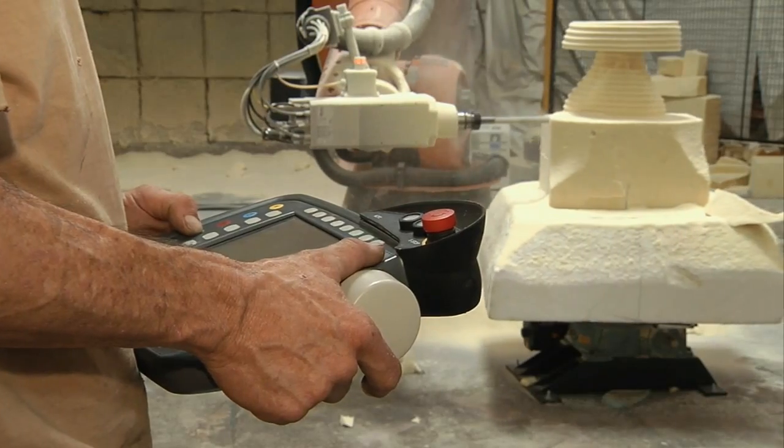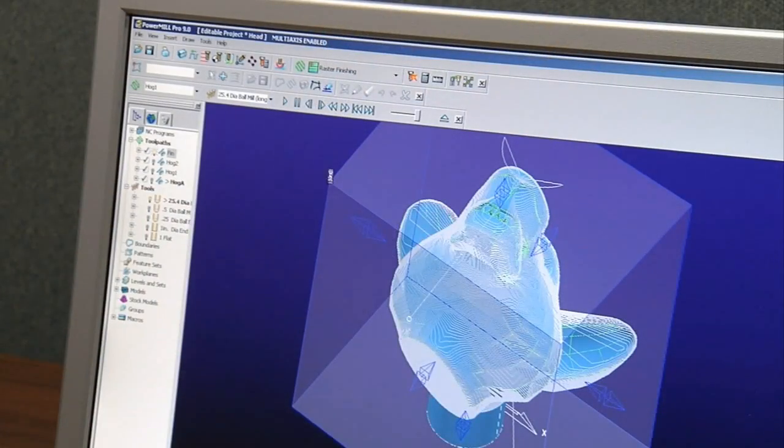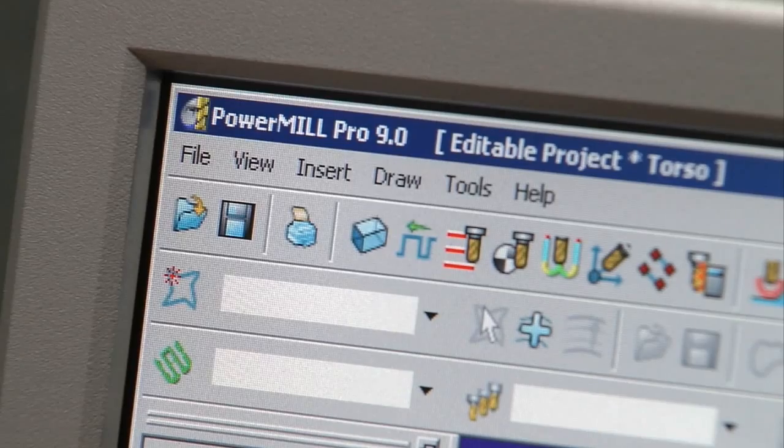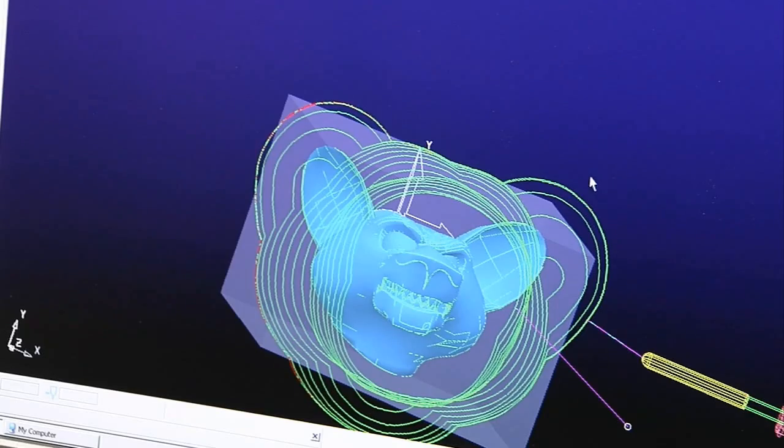Robotic Solutions taught Holt's people the entire process: how to scan or create designs using softwares like PowerMill and PowerShape, then how to alter or make those parts any size they want. In this case, turning small parts into huge parts.